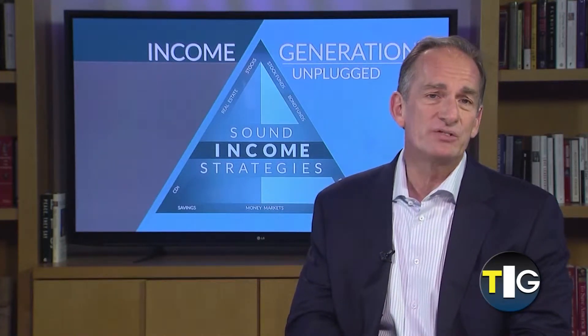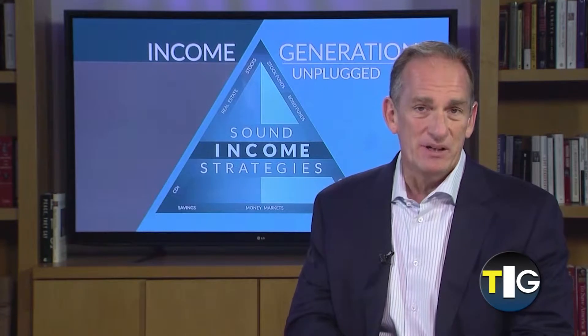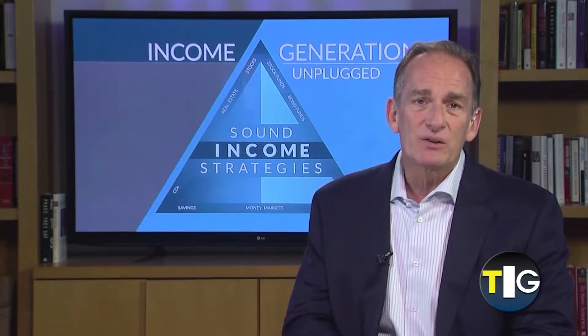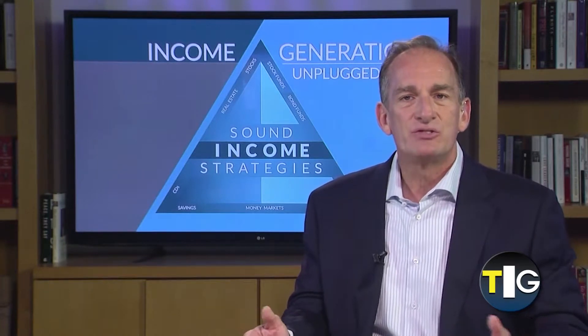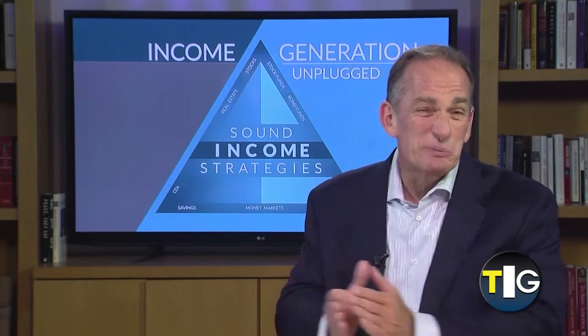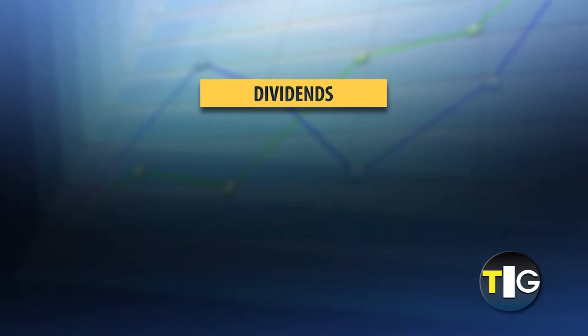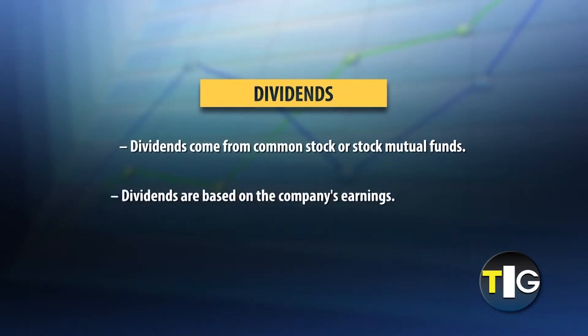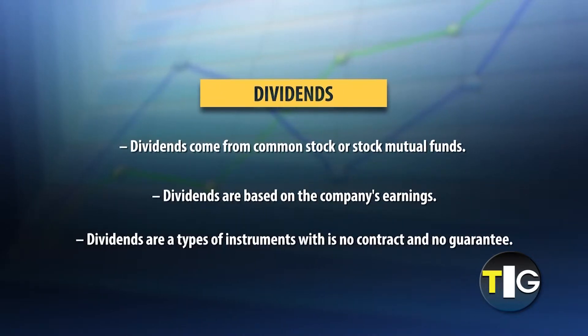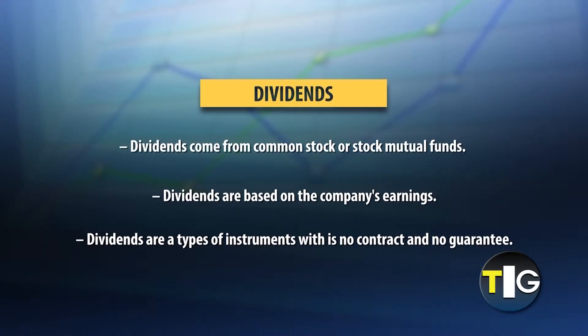Dividends, on the other hand, from common stocks or stock mutual funds represent a discretionary payment which can change over time. Typically they're a share of the profits, as you're in essence part owner of the company when you buy their stock. They're based upon the company's earnings, provided that it's making money. With dividends from these types of instruments, there is no contract and no guarantee.